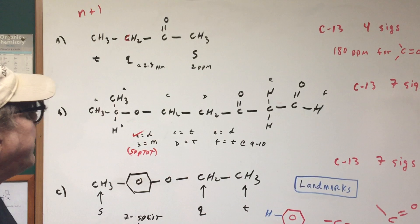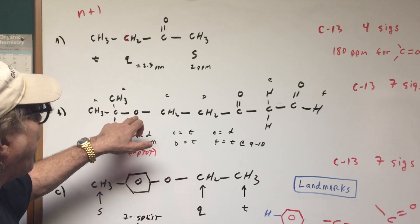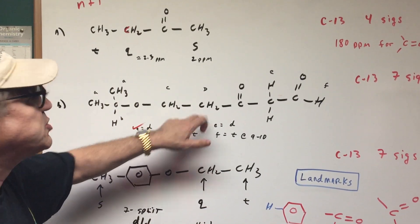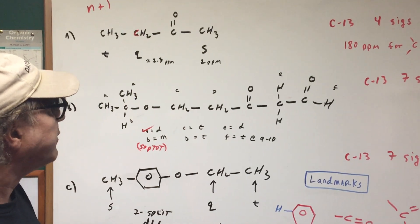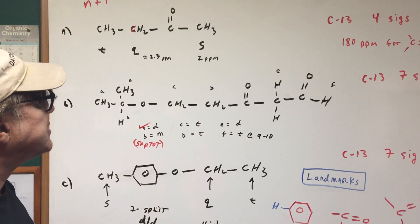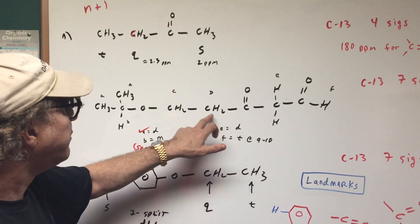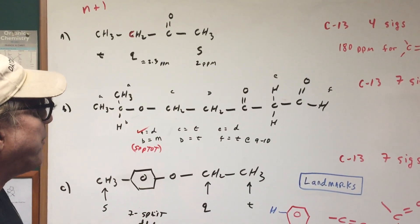If we go to letter C now, you look to the left, nothing. You look to the right, there's two. Two plus one is three, that would give a triplet. Letter D would be done in the same fashion. Nothing to the right, two to the left, and add one would be a triplet.